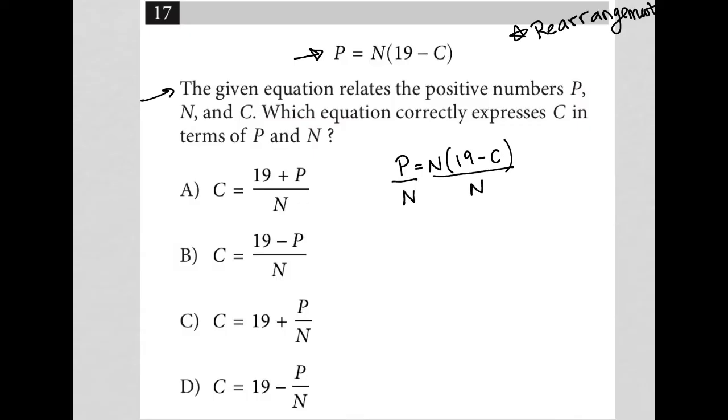Because in doing so, I'd cancel out my Ns on the right-hand side. And therefore, I'd have P over N is equal to 19 minus C.